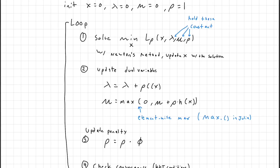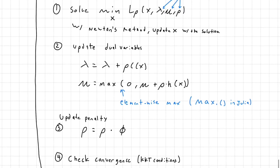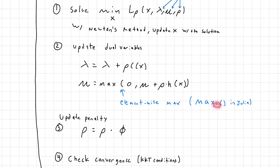We solve until it converges — it should take one step but may take more due to numerical reasons. Then we update x with the solution and move to the dual variable updates. For equality constraints, we update lambda as: lambda = lambda + rho * c(x). For inequality constraints, we take the element-wise max of a vector of zeros and mu + rho * h(x). In Julia, you can use a dot before the function name to evaluate element-wise.